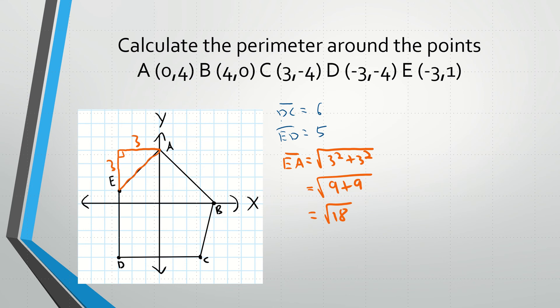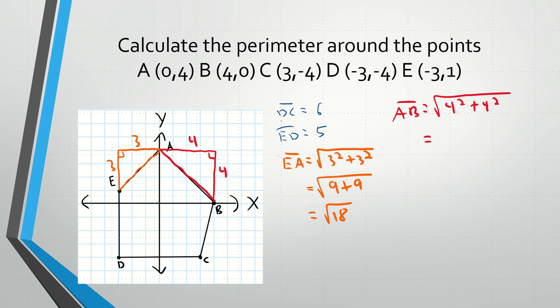Let's move on to the next one, AB — that's this distance right here. We need to create a right triangle with AB as the hypotenuse. Counting the legs: one side is 4 and the other is also 4. So AB is going to be the square root of 4 squared plus 4 squared, which is the square root of 16 plus 16, which is the square root of 32. We'll find the decimal later.